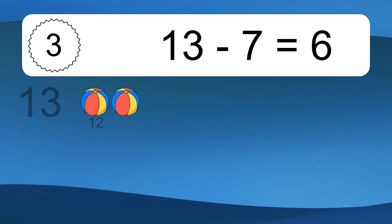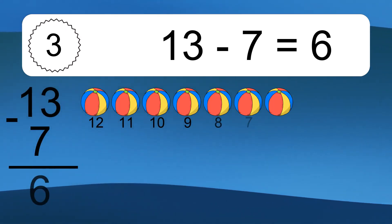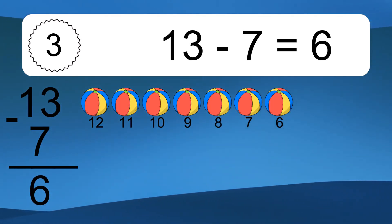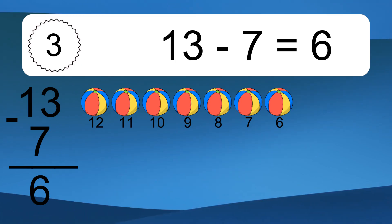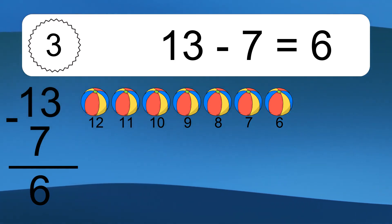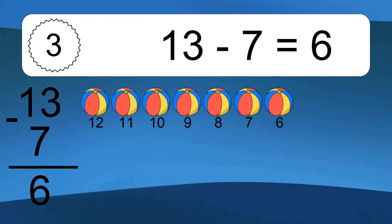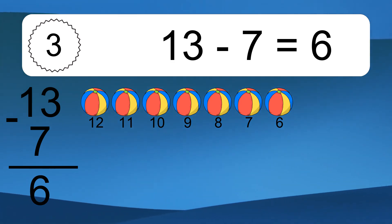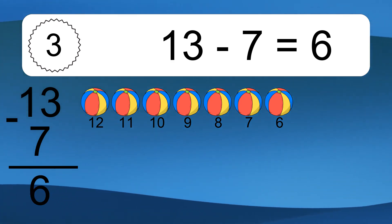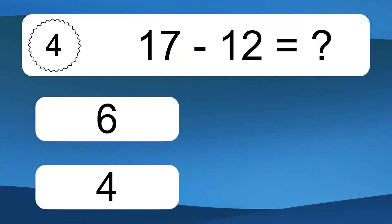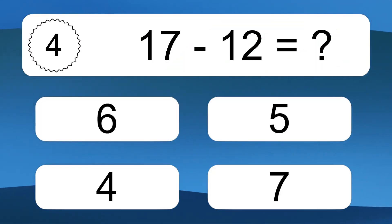13 minus 7 equals what? 13 minus 7 equals 6. Let's count it: 12, 11, 10, 9, 8, 7, 6.